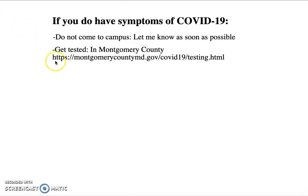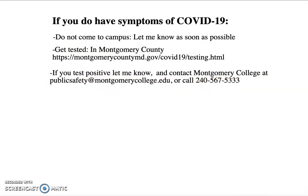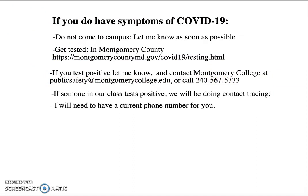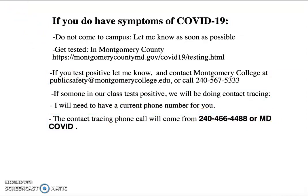Get tested. In Montgomery County, you can find out about testing information at the web address shown here. If you test positive, let me know and contact Montgomery College Public Safety — the web link, email address, and phone number are shown here. You need to let me and Montgomery College know if you test positive. If someone in our class does test positive, we will be doing contact tracing. I will need to have a current phone number for you. The contact tracing phone call will come from 240-466-4488 or MDCOVID, so if you see those numbers on your phone, you should answer them.